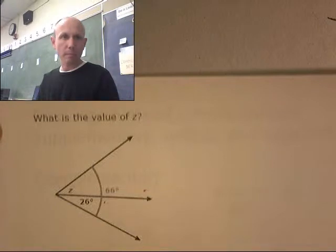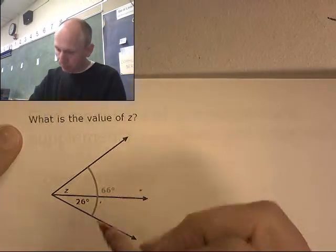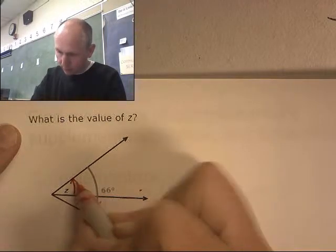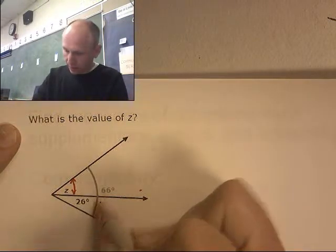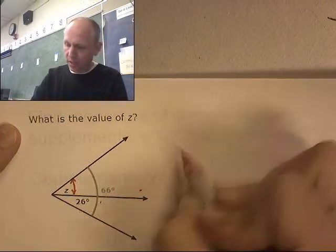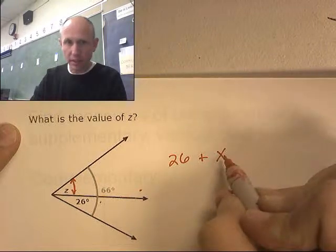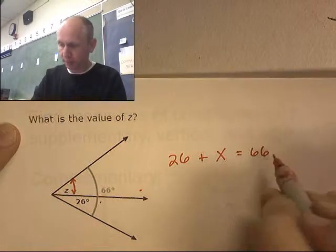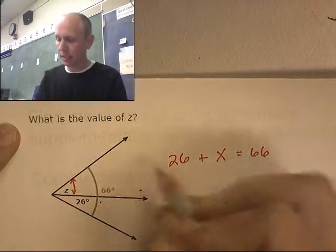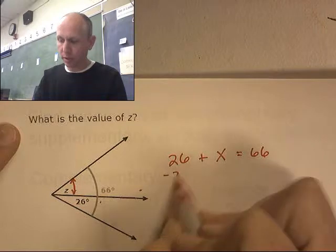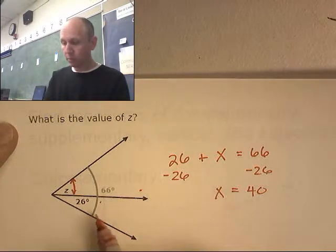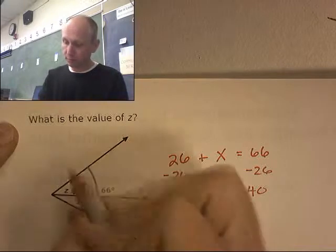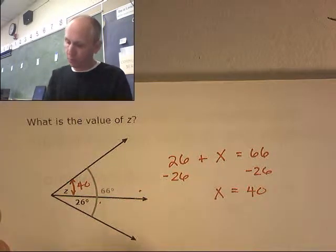One final one. What is the value of Z? What is the value of this angle right here? Well I know the entire angle is 66. And this little angle right here, this adjacent angle is 26. So it's 26 plus something equals 66. And I could do a little algebra here. Solve it. X equals 40. Does that work? 40 plus 26 equals 66. Does that work? 40 plus 20. Yep, that works. So our answer is 40 degrees. Remember these are adjacent angles.